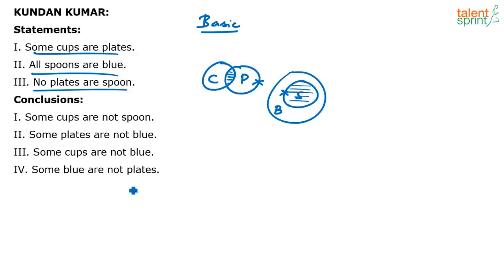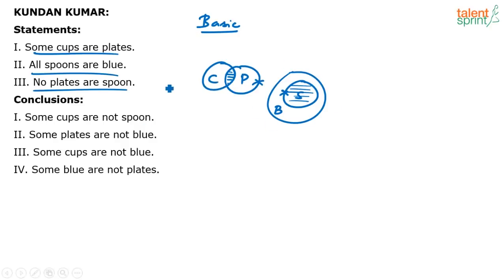Now let's verify the conclusions. Remember, a conclusion which does not follow the basic diagram is definitely false — it does not follow the statements at all. But when a conclusion follows the basic diagram, you have to check the possible diagrams as well. If a conclusion does not follow the basic diagram, it is false; but when it follows the basic diagram, you still have to check the possible diagrams.